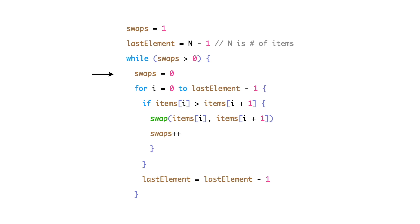We need to reset the number of swaps to zero before starting the iteration. The for loop starts at zero and continues until the end of the unsorted partition.